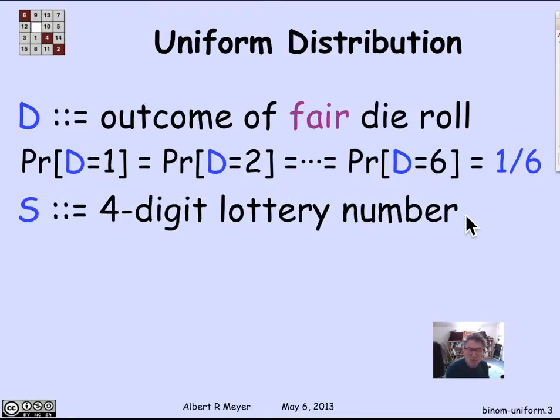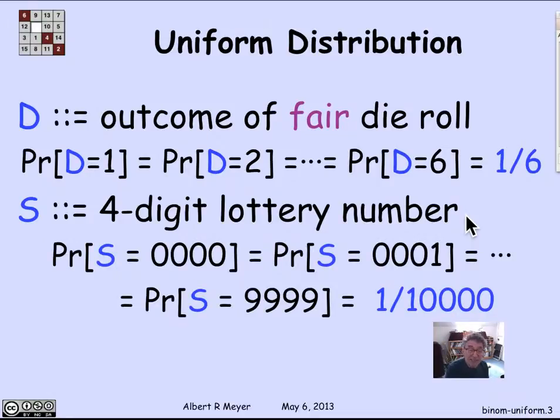Another example is the four-digit lottery number, where it's supposed to be the case that the four digits are each chosen at random, which means that the possibilities range from four 0's up through four 9's for 10,000 numbers. And they're supposed to be all equally likely. So the probability that the lottery winds up with 0000 is the same as that it ends up with 0001, is the same that it ends up with four 9's. It's 1/10,000, so that's another uniform random variable.